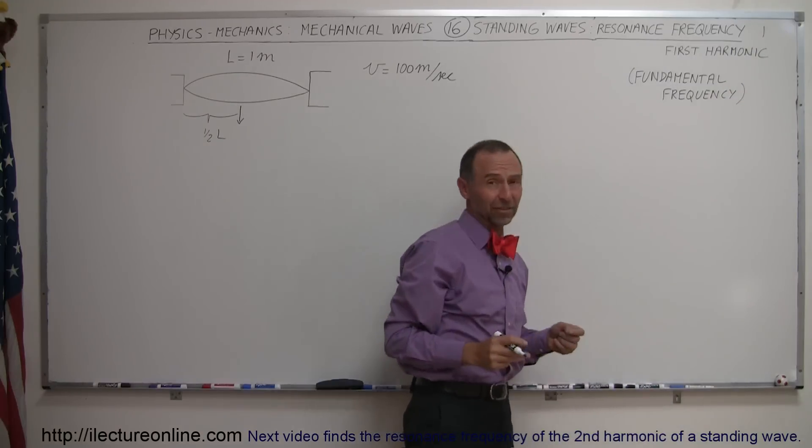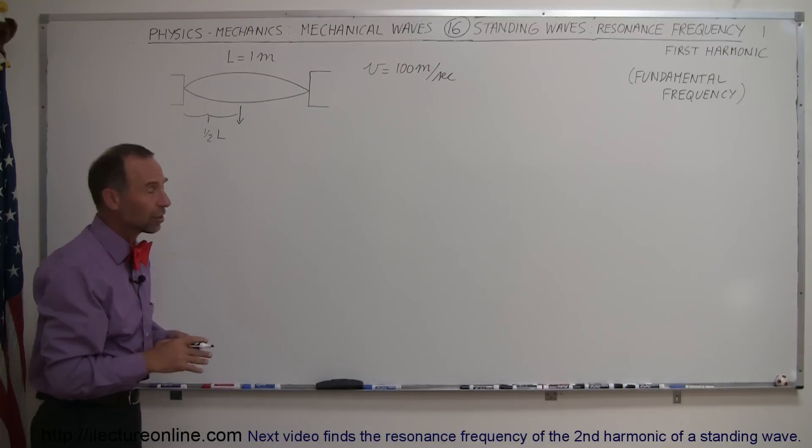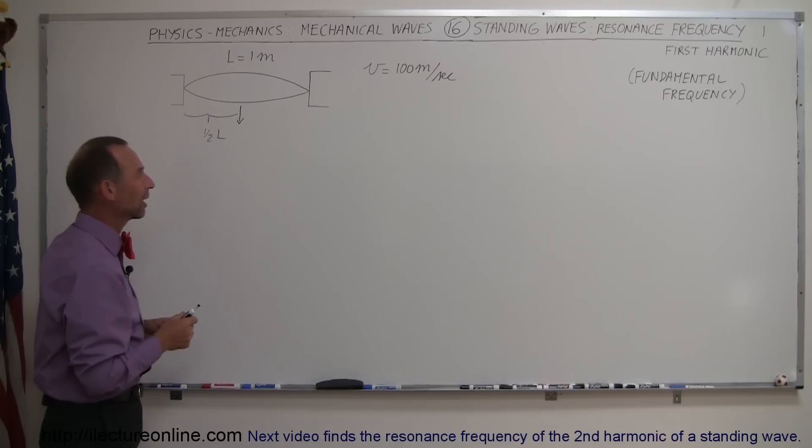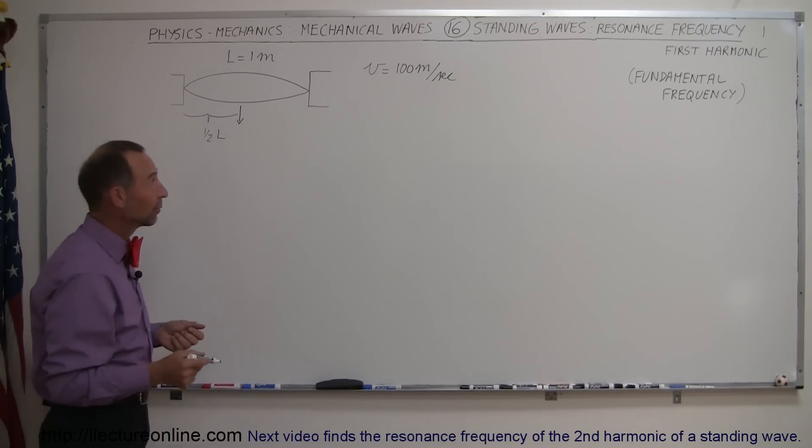If you have, let's say, a guitar string or piano string or a violin string, you pluck it at the halfway point of the string—that's typically not what's done, especially with guitars—then you will get what we call the standing wave where we have the fundamental frequency. Let's find out what that fundamental frequency is.